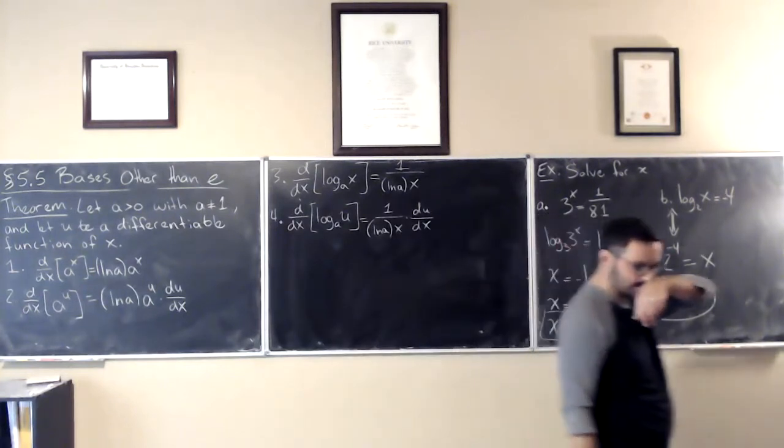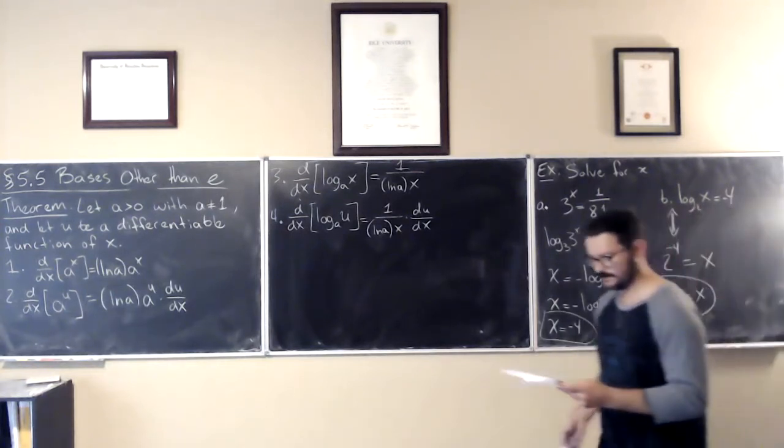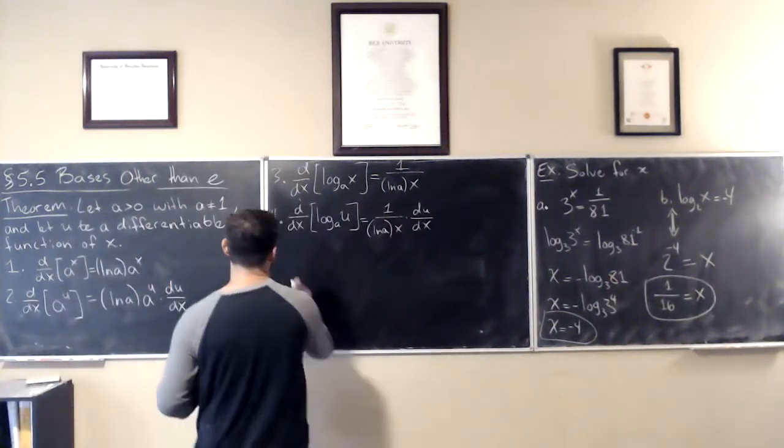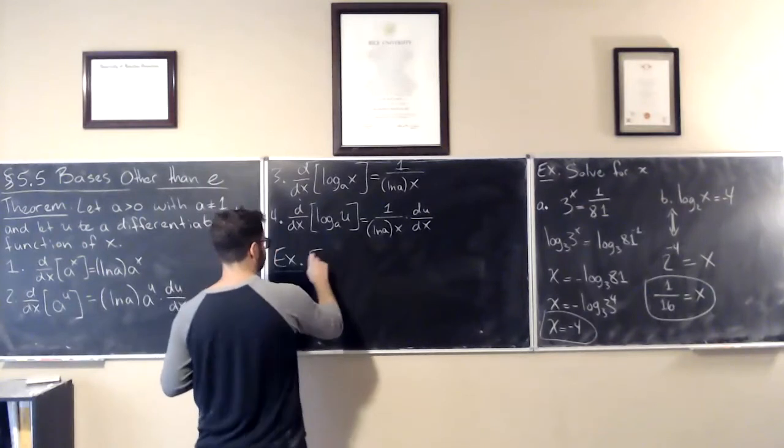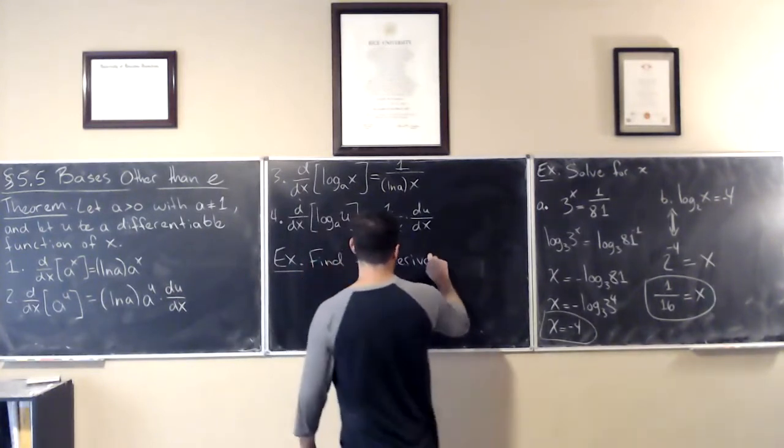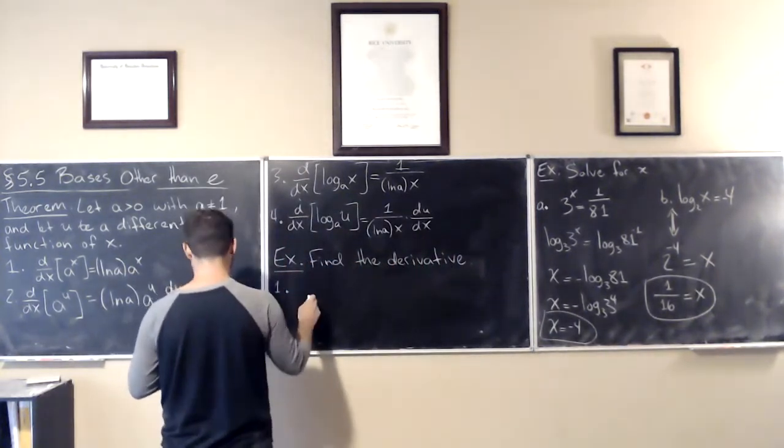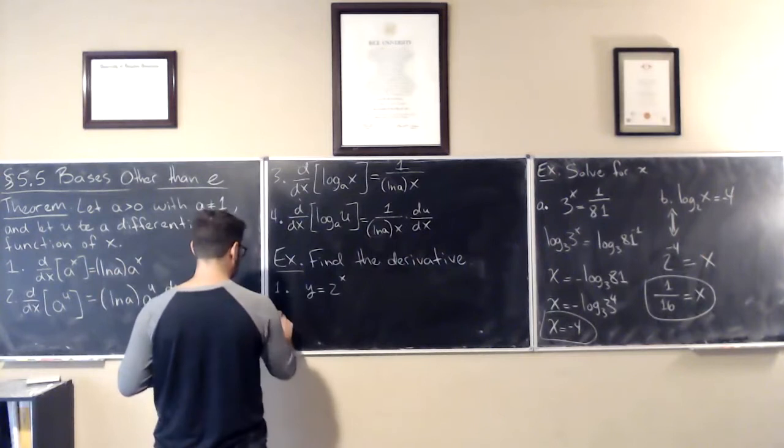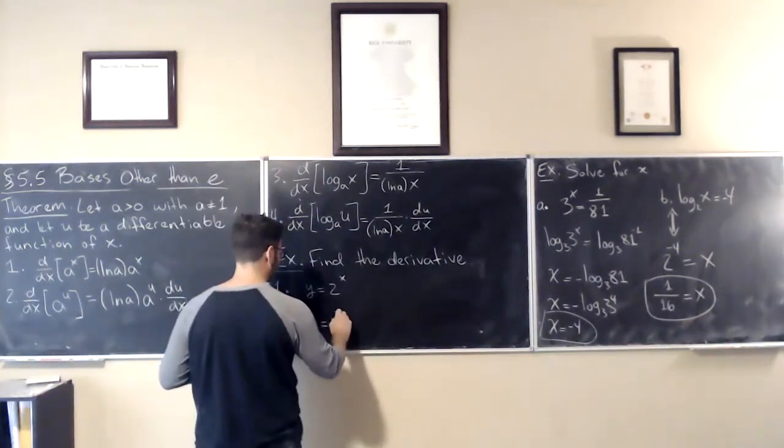Okay, so this is, I guess we just do examples now. Find the derivative. So part a: if y is equal to 2 to the power of x. Part b: y is equal to 2 to the power of 3x.